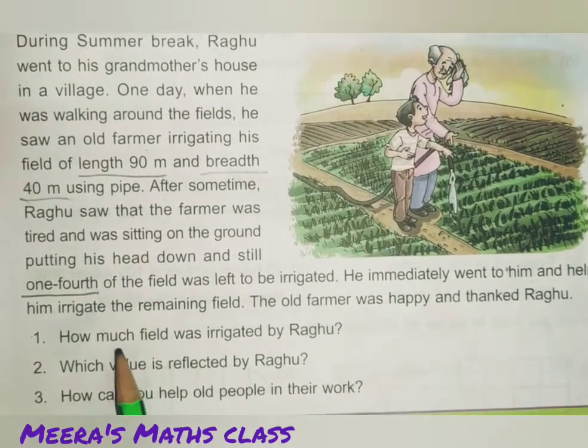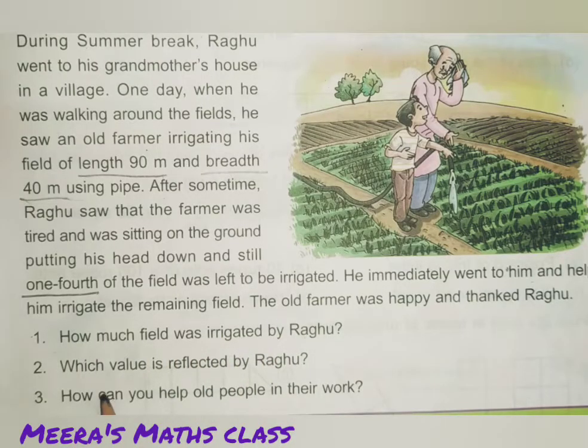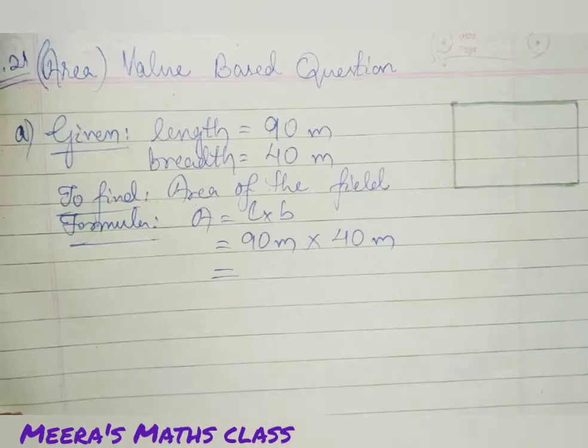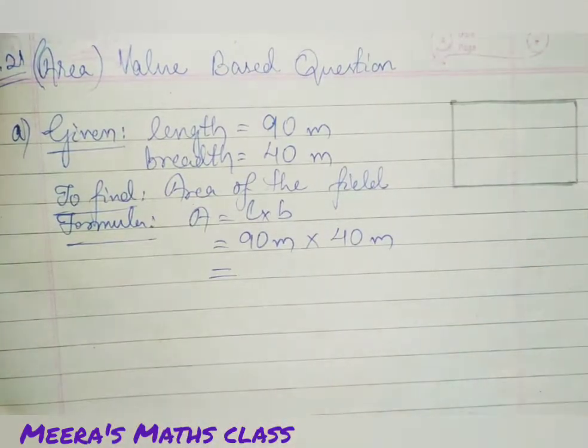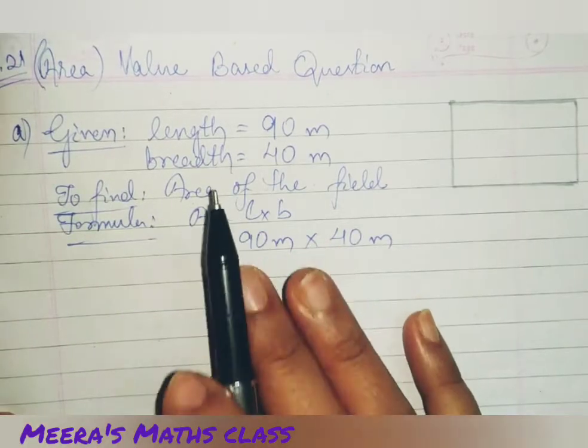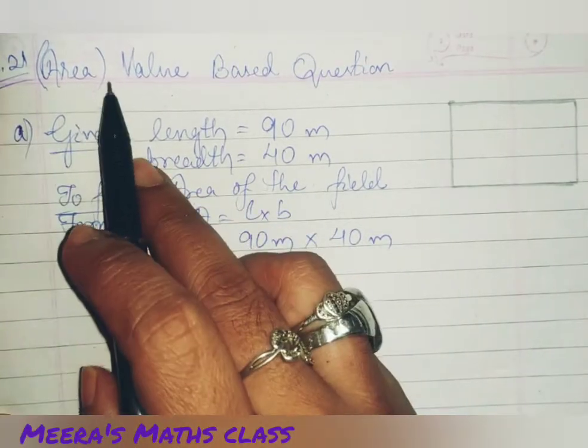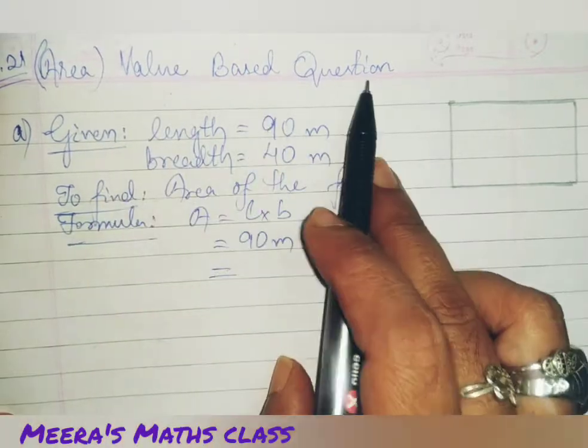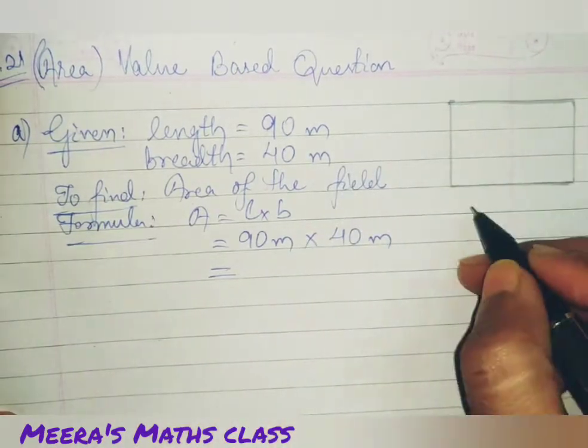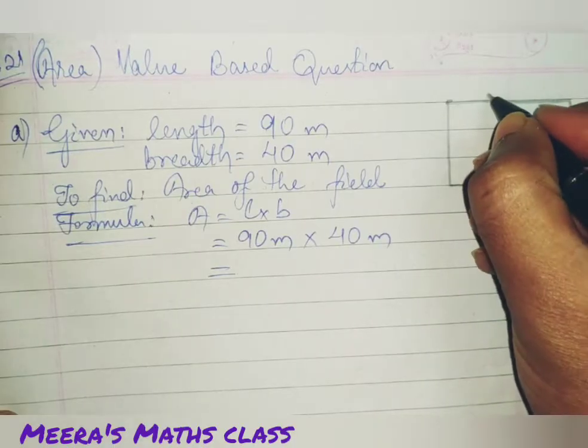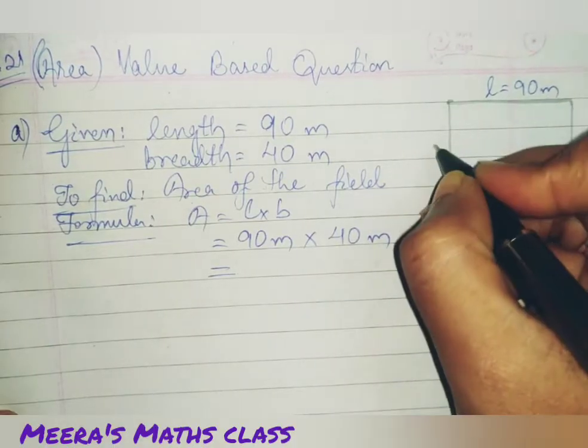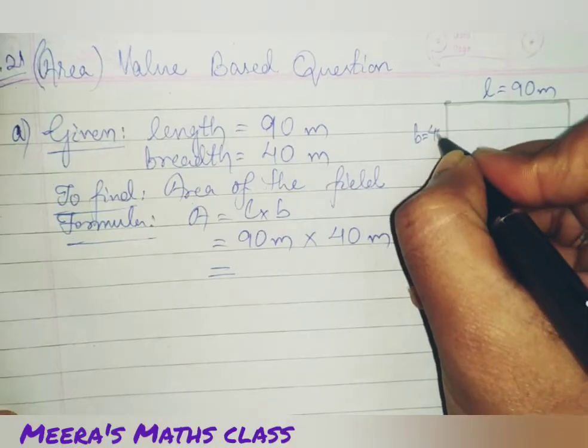First question, how much field was irrigated by Raghu? So, this one we have to calculate. Then, which value is reflected by Raghu? How can you help old people in their work? So, let's start writing the answers. Now, this is the question. This is the way how you will write in the copy. Put the date, then write area, value-based question. First, draw the rough figure. This is the rectangular field. Length is given. L is equal to 90 meter. And breadth is given as 40 meter.